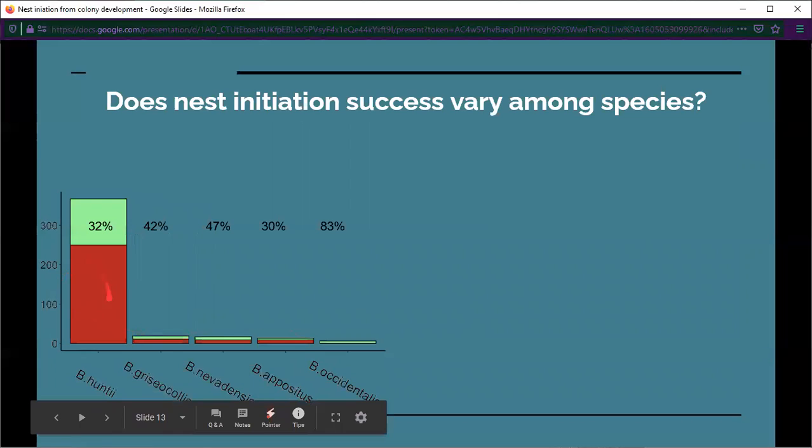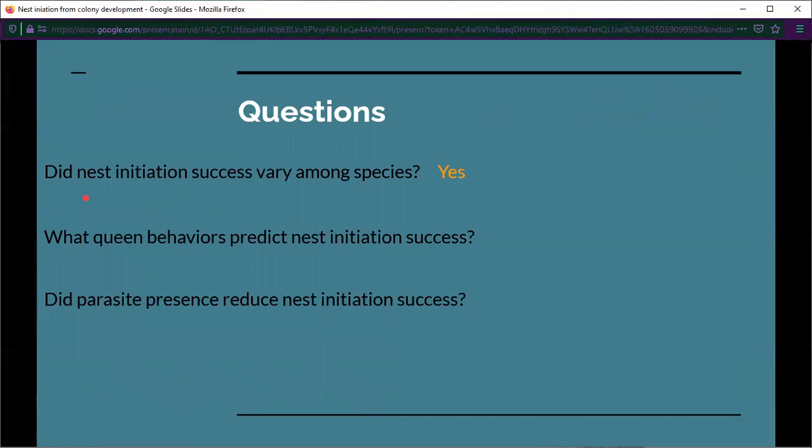This graph is similar to the one before. The red bars represent oviposition failure, the green bars represent oviposition success. What's notable here is Bombus huntii and Bombus occidentalis. Bombus huntii was by far the most abundant species in Laramie, and Bombus occidentalis was easily the least abundant. Occidentalis queens are facing declining populations in the west. It's notable that they have such high rates of nest initiation success in the lab. Did nest initiation success vary among species? Yes, it did.